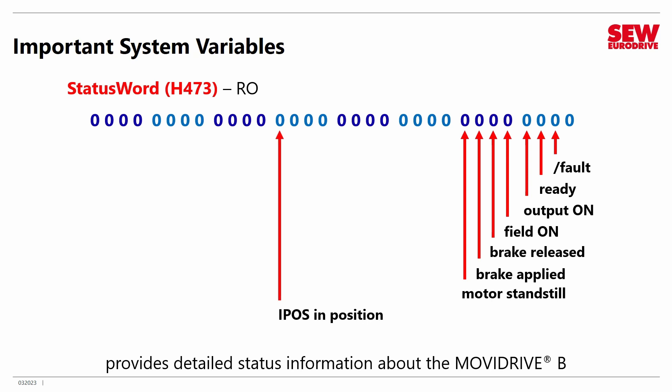And this is a very important one: IPOS IN POSITION. If you're doing a positioning operation, this bit will change to 1 when you arrive at your destination — that's how you know you're there. So you're often watching this bit change from 0 to 1 to tell you you've arrived; you'll be using this one quite a bit. You'll also be using the one right after it called IPOS REFERENCED, because that tells you the drive has been correctly referenced. If you took the MoviDrive B Intermediate class, you know what referencing is. IPOS REFERENCED simply indicates that if this bit is 1, the VFD has been referenced and it's ready to do positioning.